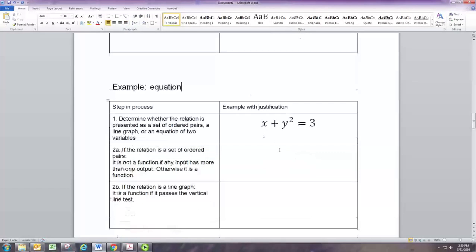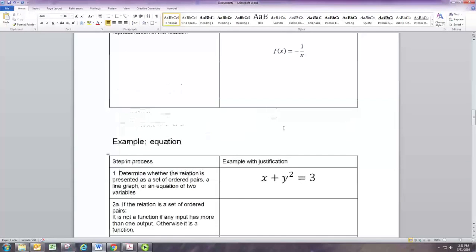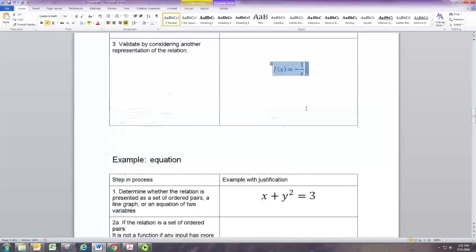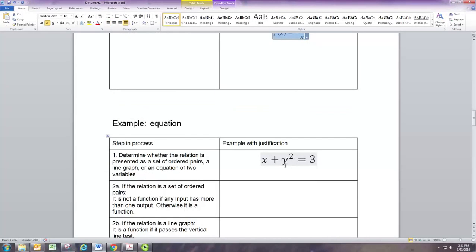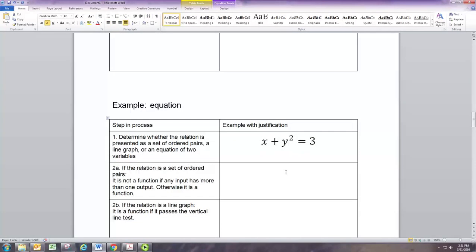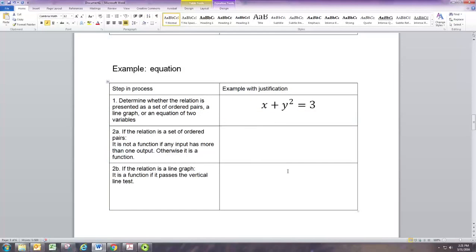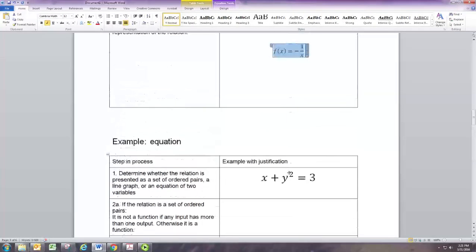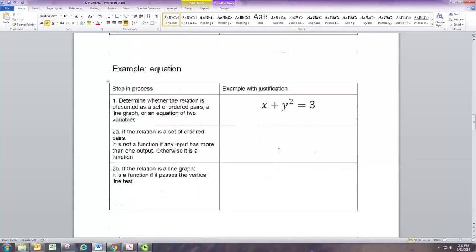The last situation is where we're given the equation of two variables. Well if it's written in function notation, then you know it's a function. But often we're just given one with two variables with the x and y notation. The assumption is that x is the input and y is the output. And the trick would be to try to put it in this function notation. In order to do that you need to solve for y. So let's take this and try to solve for y.